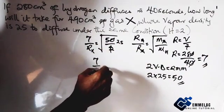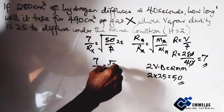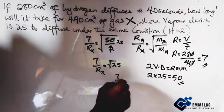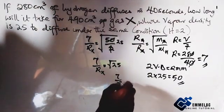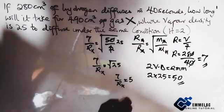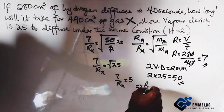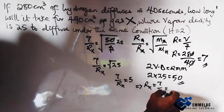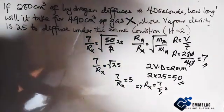over 2. This cancels, we have 25. So here we have 7 over R of X equals to the root of 25 and this gives us 7 over R of X equals 5. So R of X will give us 7 over 5.